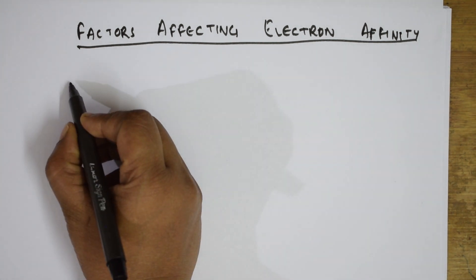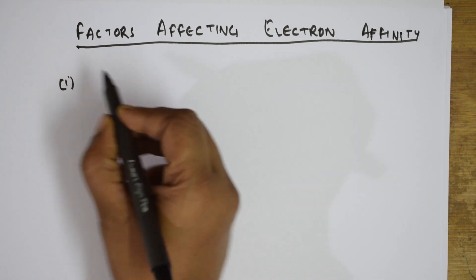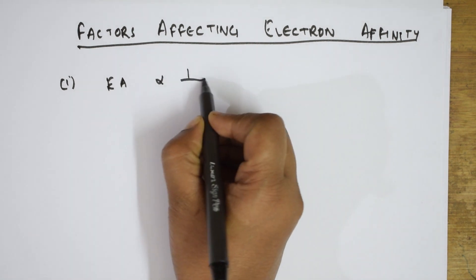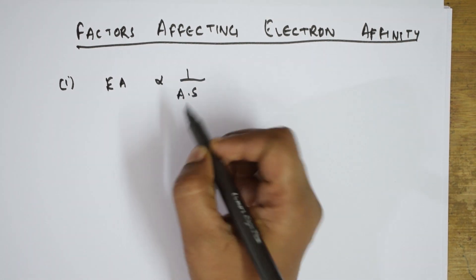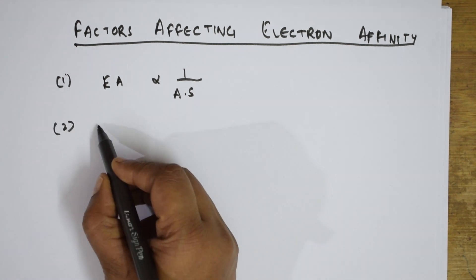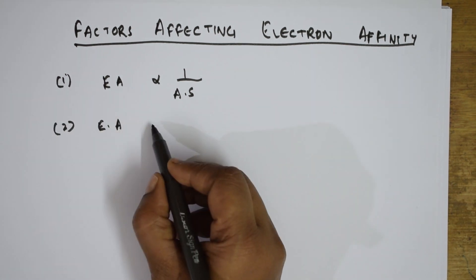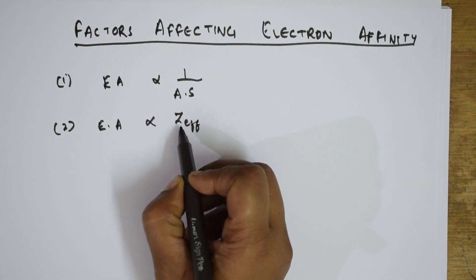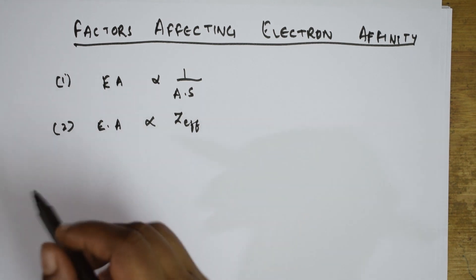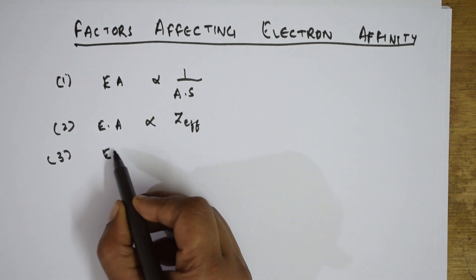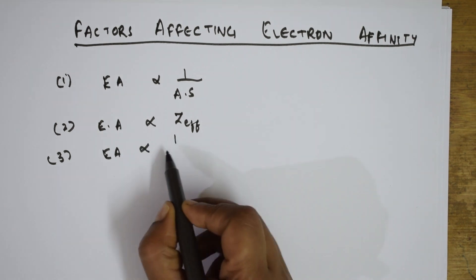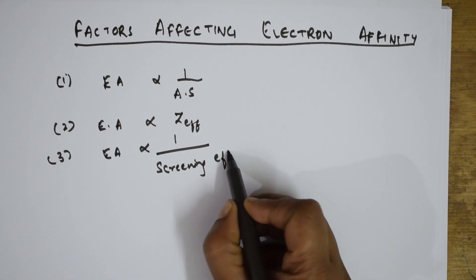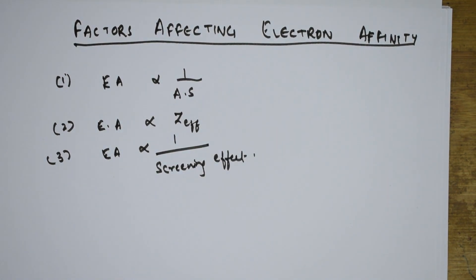Remember these tricks — they are very important. First, electron affinity is inversely related to atomic size. Second important factor: electron affinity is directly proportional to Z-effective, that is effective nuclear charge — if Z-effective is more, electron affinity value will also be more. Third: electron affinity is inversely related to the screening effect.